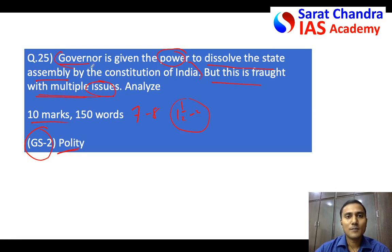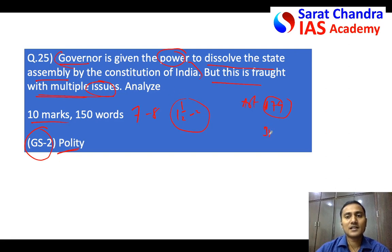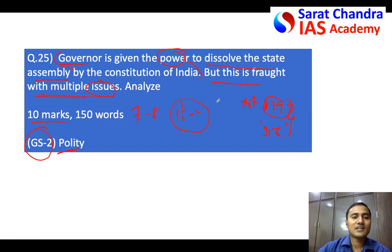Before starting the answer, remember the articles you can use in this question. You can use Article 174, which gives the Governor the power to summon, dissolve, and prorogue the assembly. Also Article 356, under which the President can dissolve the state legislative assembly. Keep these two articles in mind as you start the answer.